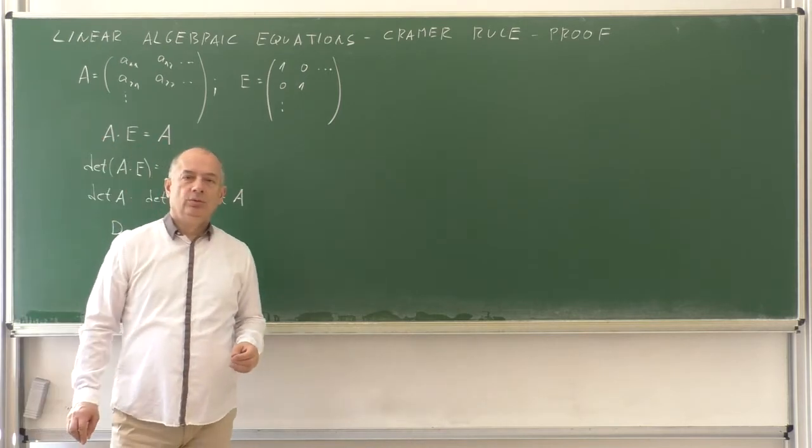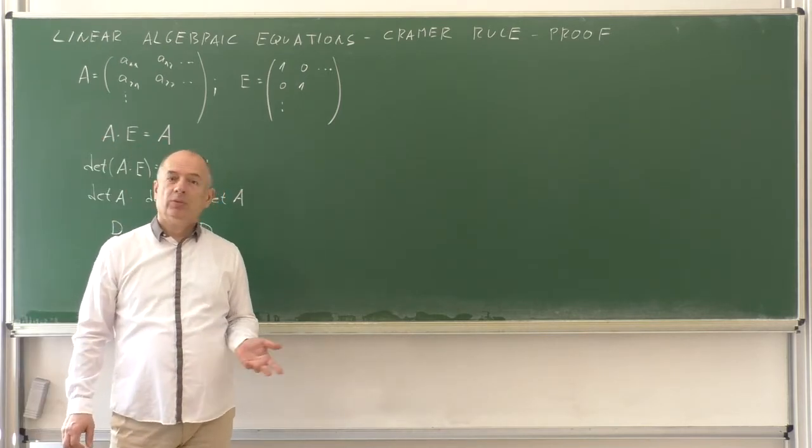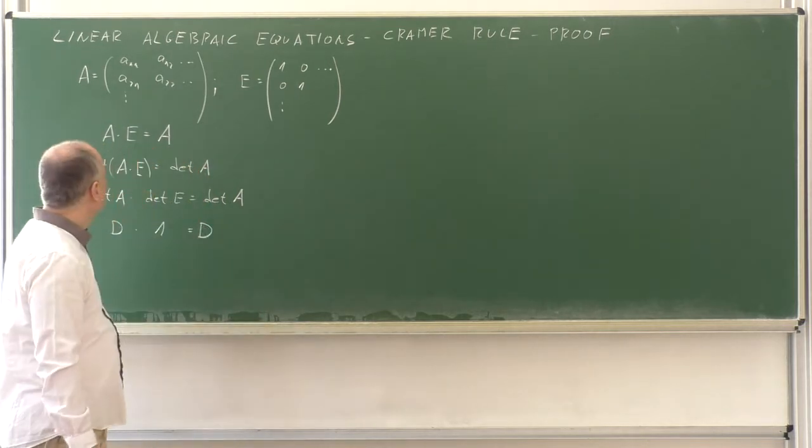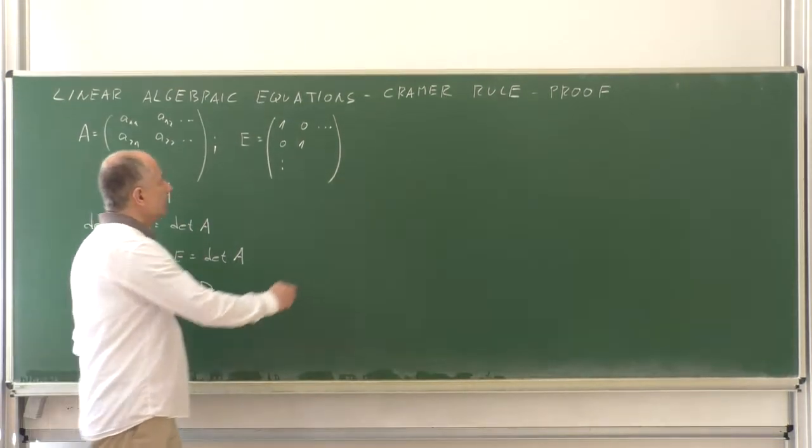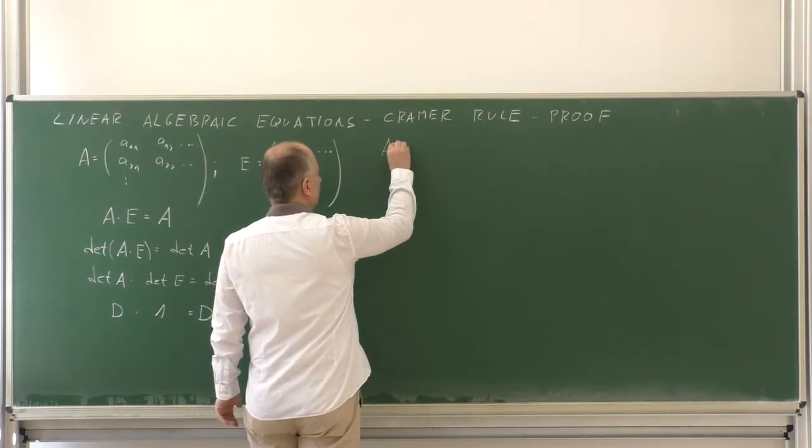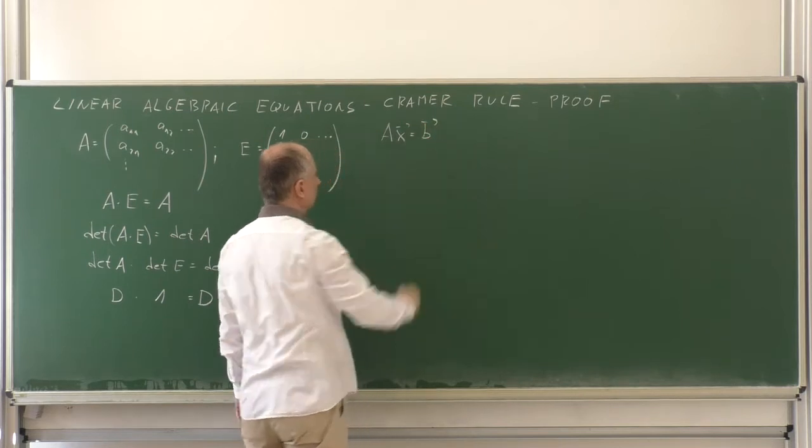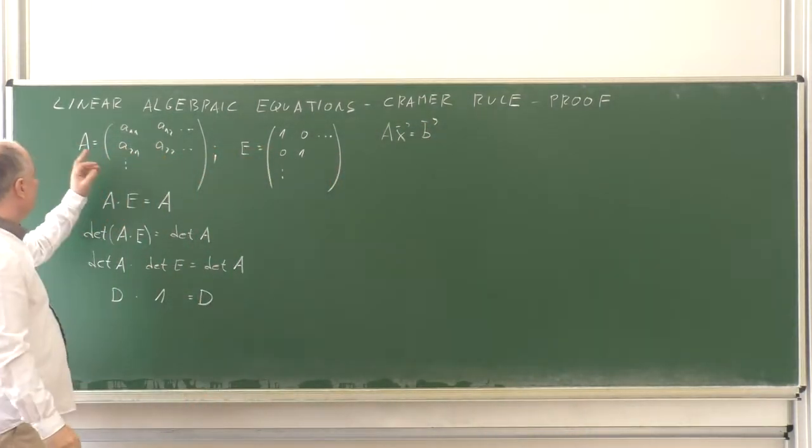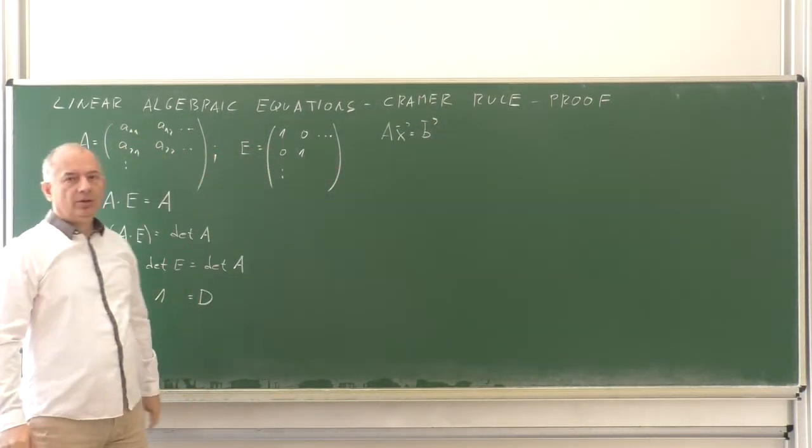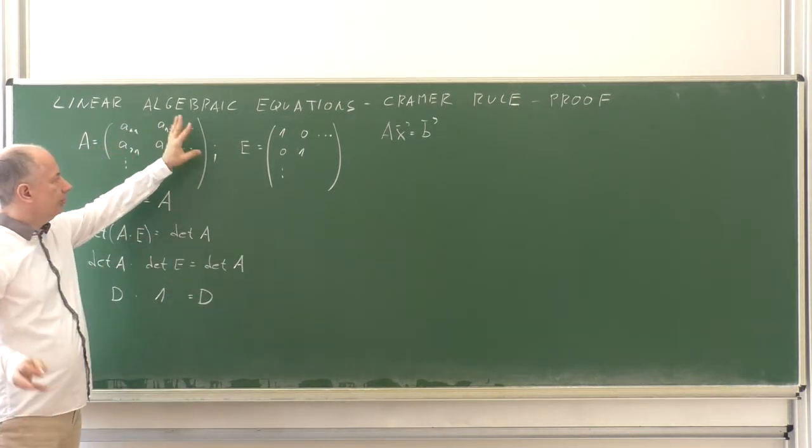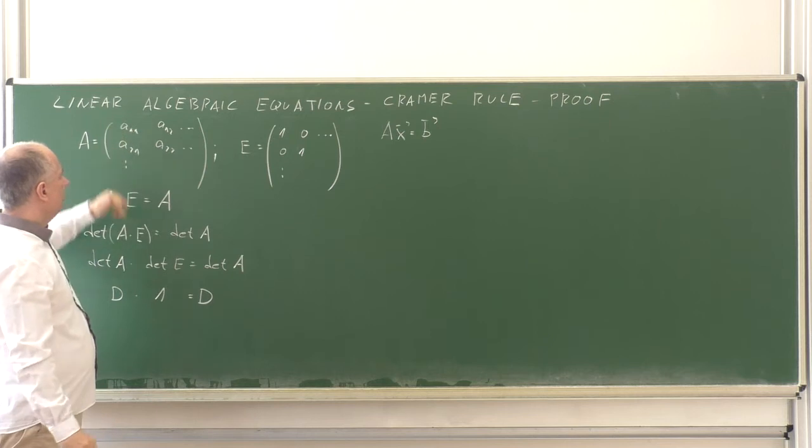We have seen how the Cramer's rule works, and now it's time to give some explanation, some kind of proof if you like. So, consider the system of equations AX is equal to B, and consider the matrix A with entries A11 and so on, some fixed number of columns and fixed number of rows.